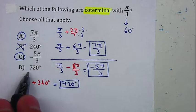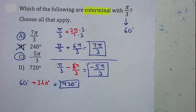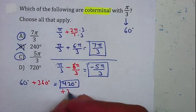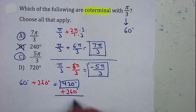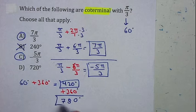Now, let's check and see if 720 is a coterminal angle. So therefore, I'm going to add another 360 degrees. That gives me 780. So therefore, 780 is also coterminal, but it's not listed.